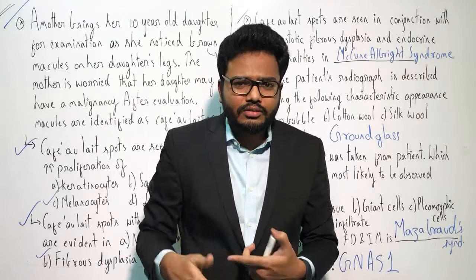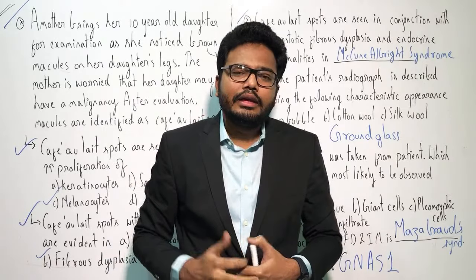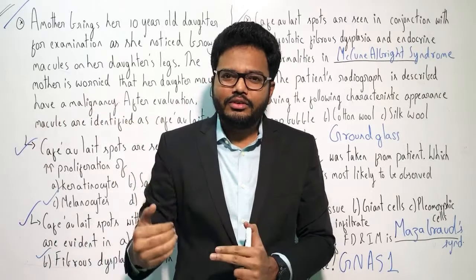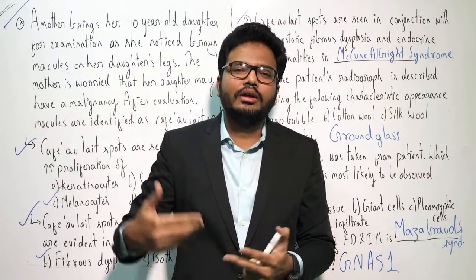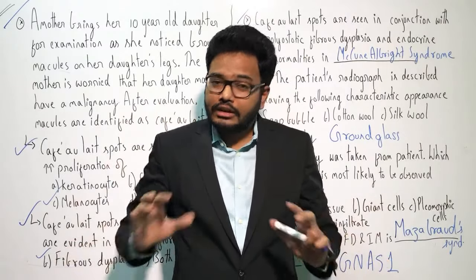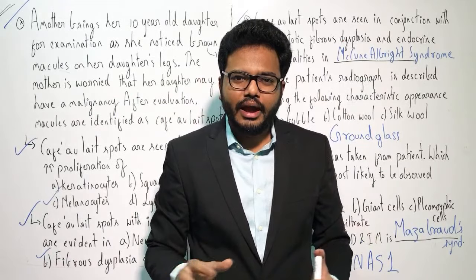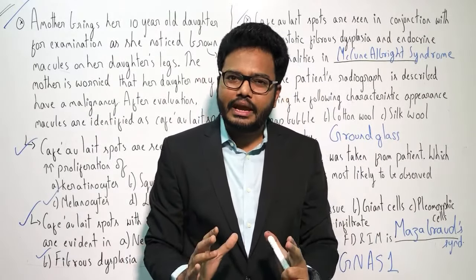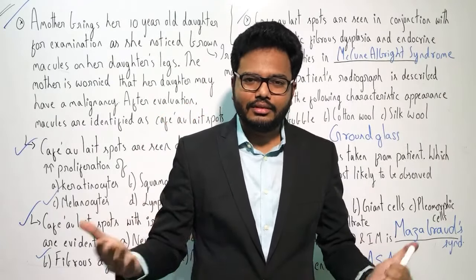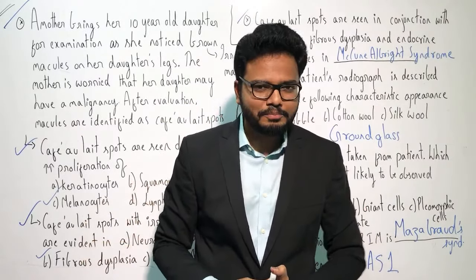This excess stimulation explains why we see excess production of cortisol, growth hormone, hyperthyroidism, precocious puberty, and other endocrinopathies — that is the etiopathogenesis behind fibrous dysplasia. The gene implicated is GNAS1, and the mutation in this gene leads to fibrous dysplasia. Also remember: fibrous dysplasia is not hereditary.